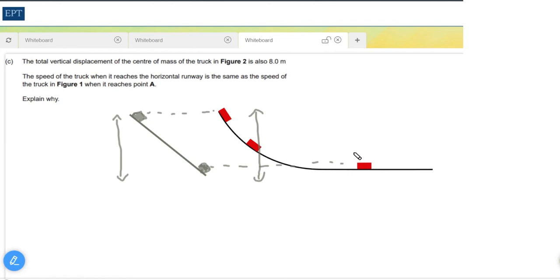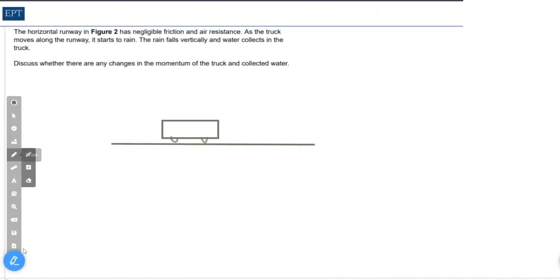This last part then is a typical AQA let's have a chat about a physics problem, and as long as you have a bash you'll get some credit for it. In our first instance, this trolley is going to have a constant momentum to the right. We are told that friction and air resistance are negligible.